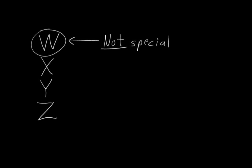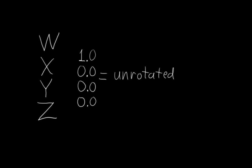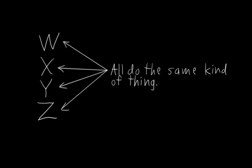The only difference is that we consider 1, 0, 0, 0 to be unrotated. But we don't have to. We could consider 0, 1, 0, 0 unrotated, and then X would be the special number. Okay, so this is probably pretty unhelpful so far, but I want to make sure you understand that there isn't some special different meaning that W has compared to the other numbers. It's not like axis angle where W is the angle and X, Y, Z are the axes. No, with quaternions, all of the numbers do the same kind of thing. But what is that? What do they do?